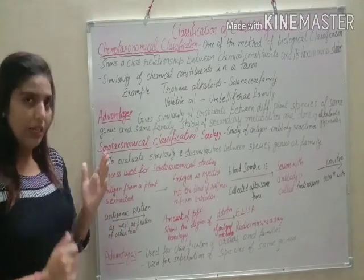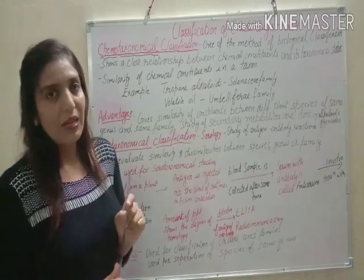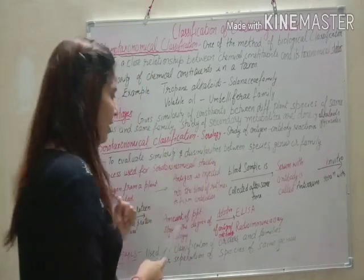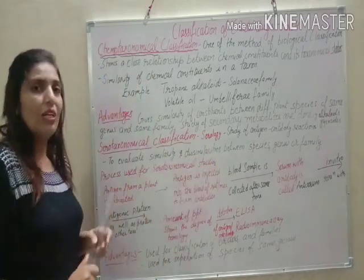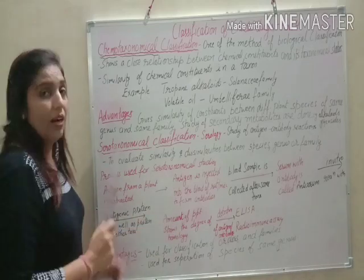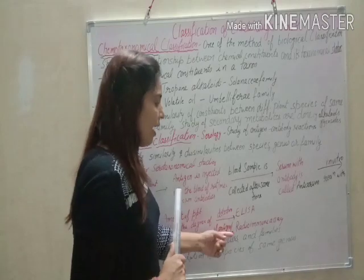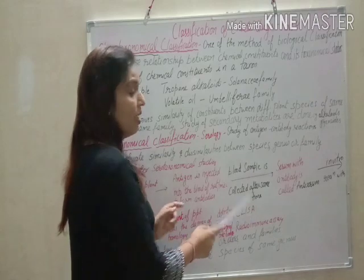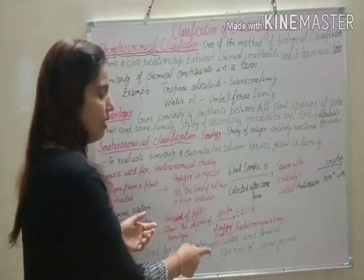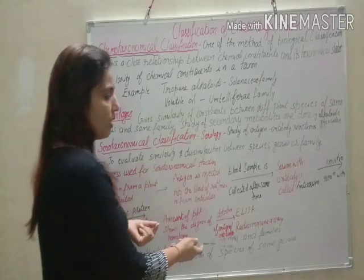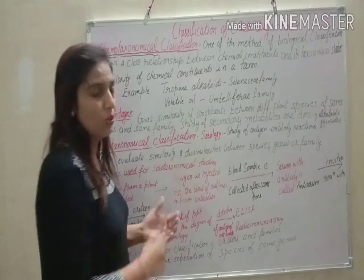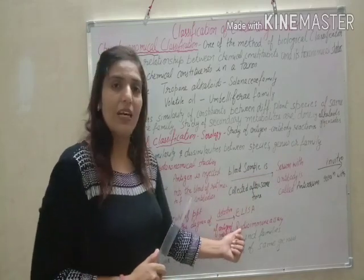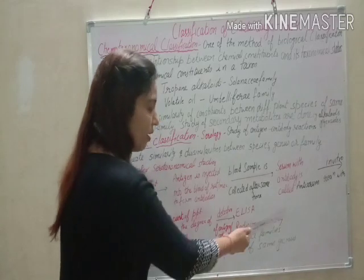From the degree of coagulation, we can determine whether Plant A and Plant B are similar or dissimilar. If the degree of coagulation is more, the plants are more similar; if less, the similarity is less. We can detect the degree of coagulation using different techniques — ELISA (enzyme-linked immunosorbent assay) and radioimmunoassay. In radioimmunoassay, radioactive materials are used; in ELISA, enzymes are used to label the antigen and antibody.